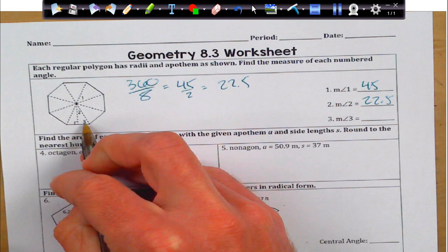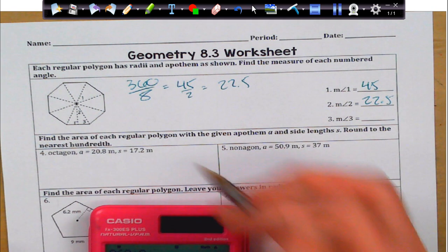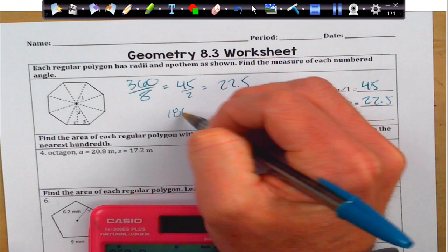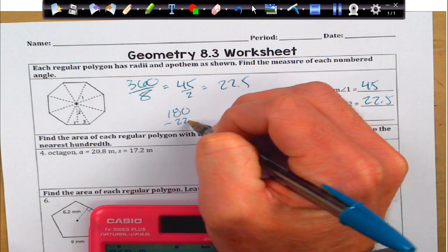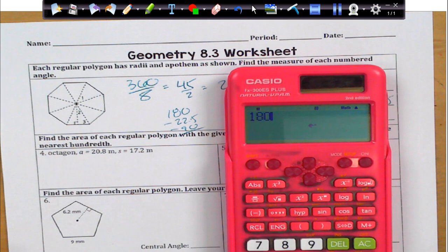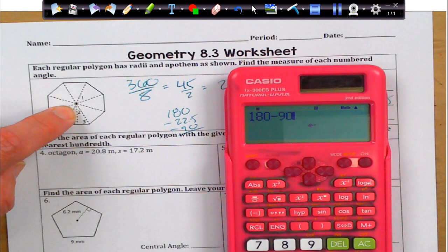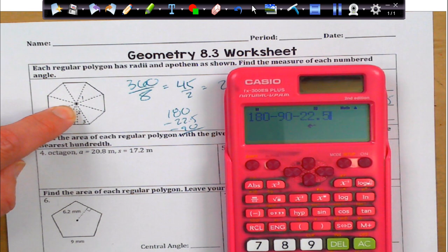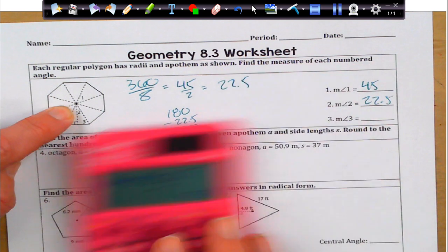And then angle 3 right down here at the bottom corner, since that's a triangle, if I just take 180, if I subtract 22.5 and I subtract 90, I should be left over with the final result. So, 180 minus 90, that's right there, minus the 22.5. That should be my leftover of 67.5.